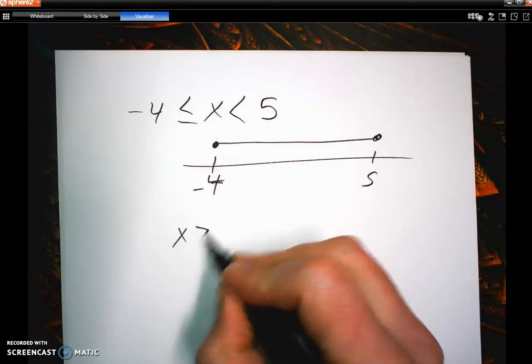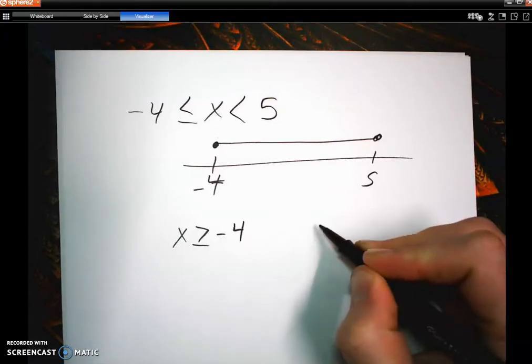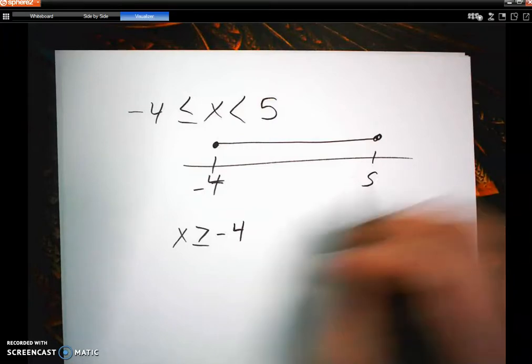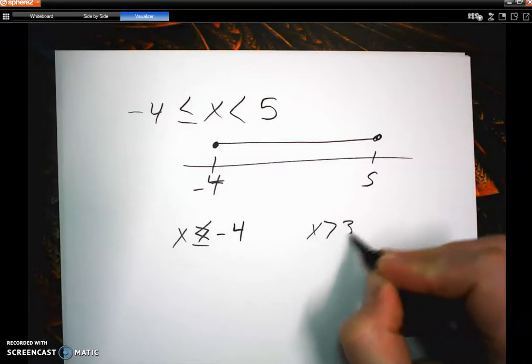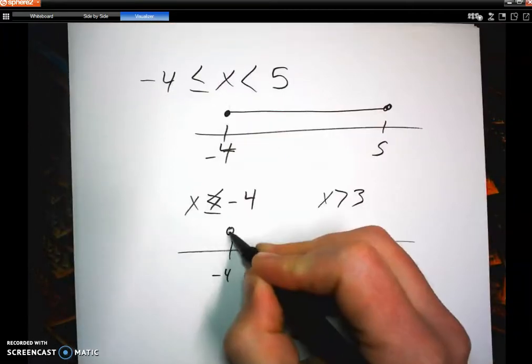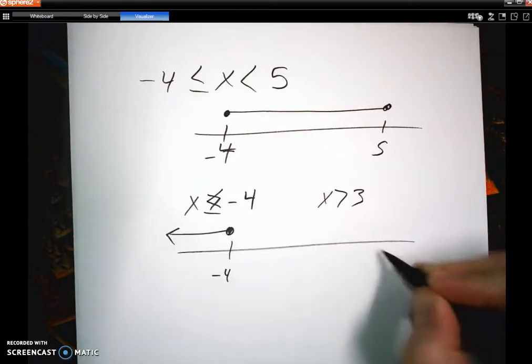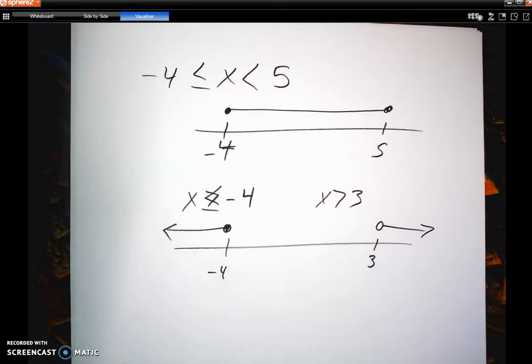But also like or inequalities. Like x is less than or equal to negative 4 and x is greater than 3. So on your graph you're going to see a negative 4 with closed circle going to the right and that 3 with open circle going to the left. Remember we sounded like seals. So be aware you're going to have some compound inequalities in there.